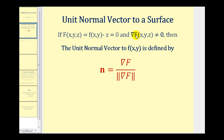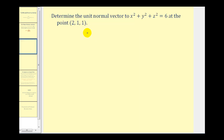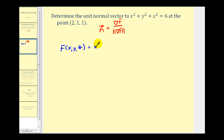Let's go and take a look at an example. Here we want to determine the unit normal vector to the given surface at the point (2, 1, 1). So let's first start by defining big F of x, y, z. That's going to be equal to x squared plus y squared plus z squared minus six equals zero. And then in order to determine the gradient of F, we're going to have to determine the partial derivatives with respect to x, y, and z.